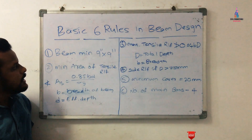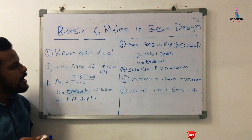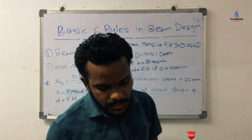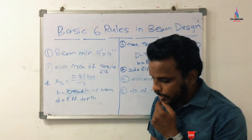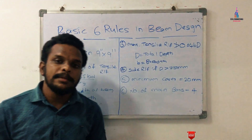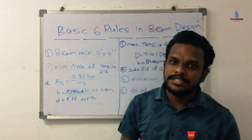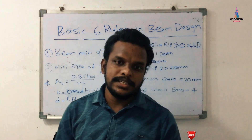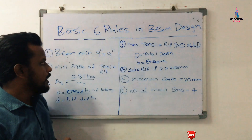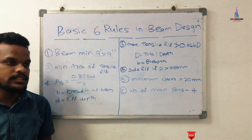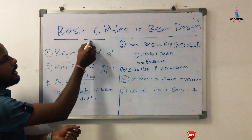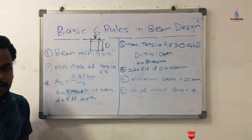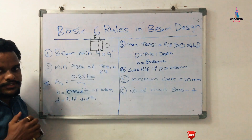The first rule: the minimum dimensions of the beam are considered as 9 inches × 9 inches. Whether you are designing a ground-story building, G+1, G+2, or any high-rise structure, the minimum beam dimensions should be 9 inches × 9 inches. This applies to building structures; for compound walls or single structures, beam dimensions may be reduced. This refers to the depth and breadth of the beam in both horizontal and vertical sections.